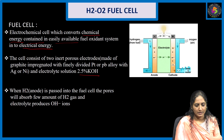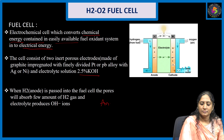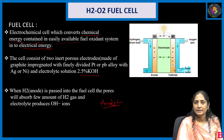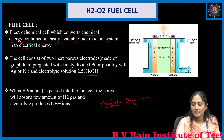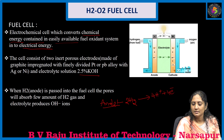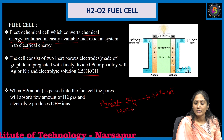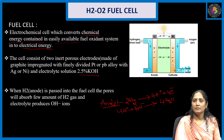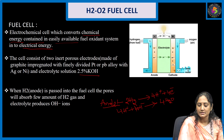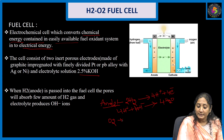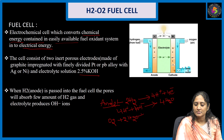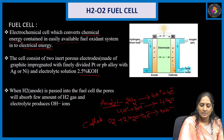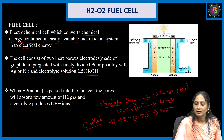At the anode, H₂ liberates H⁺ ions and electrons. The liberated H⁺ ions react with OH⁻ ions from the electrolytic solution to produce H₂O. Then, at the cathode, O₂ molecules react with H₂O and electrons to produce 4 moles of OH⁻ ions — this is the cathode reaction. At the anode, oxidation takes place; at the cathode, reduction takes place by gaining electrons.